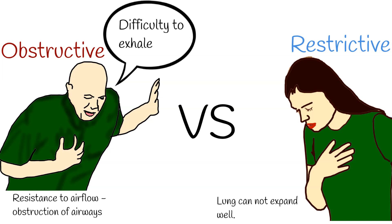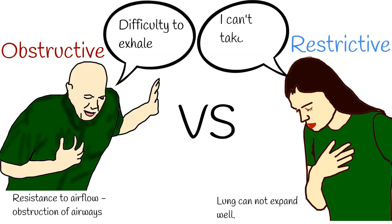While during restrictive diseases, there is a problem getting air into the lung. During restrictive disease, the lung cannot expand well. These individuals find it difficult to take a full breath. Frequently this occurs due to a condition that causes lung stiffness, muscle weakness, or physical restriction.